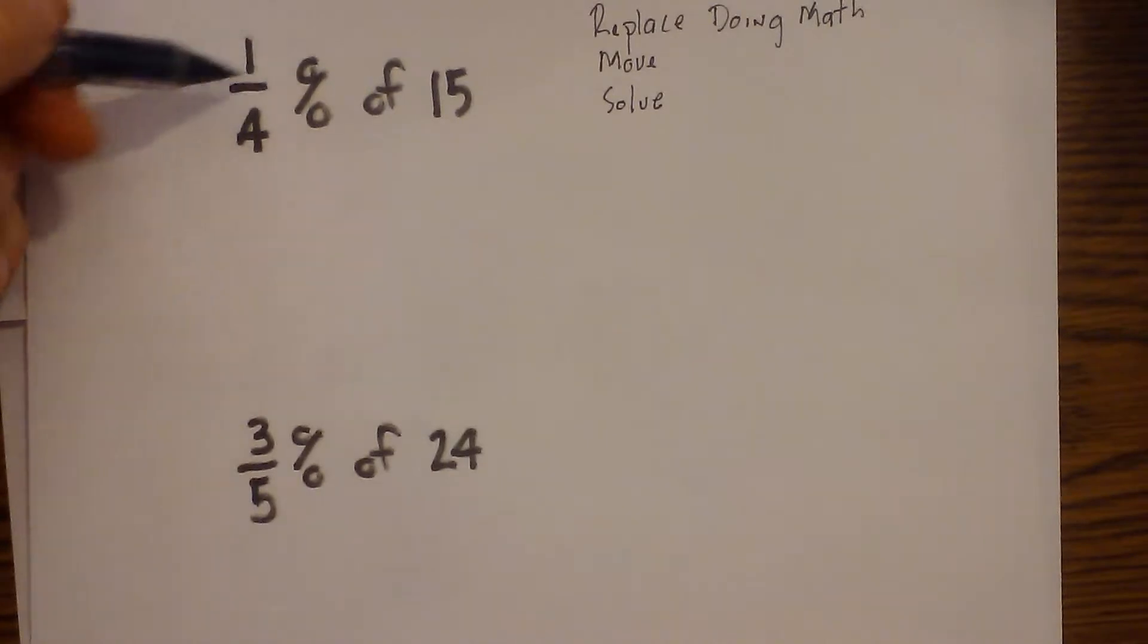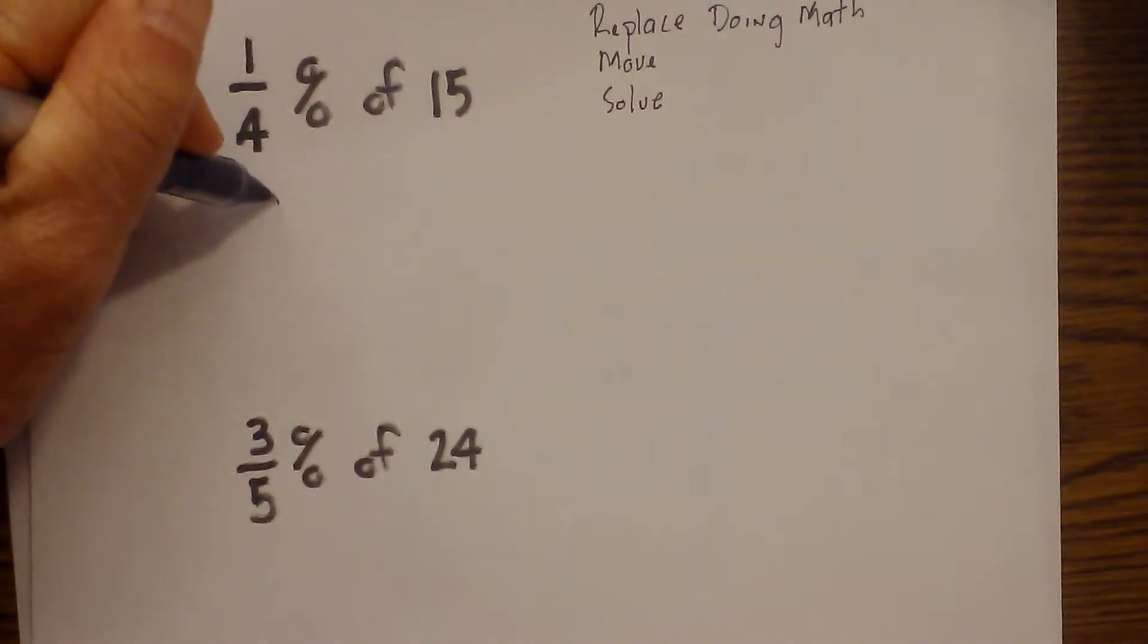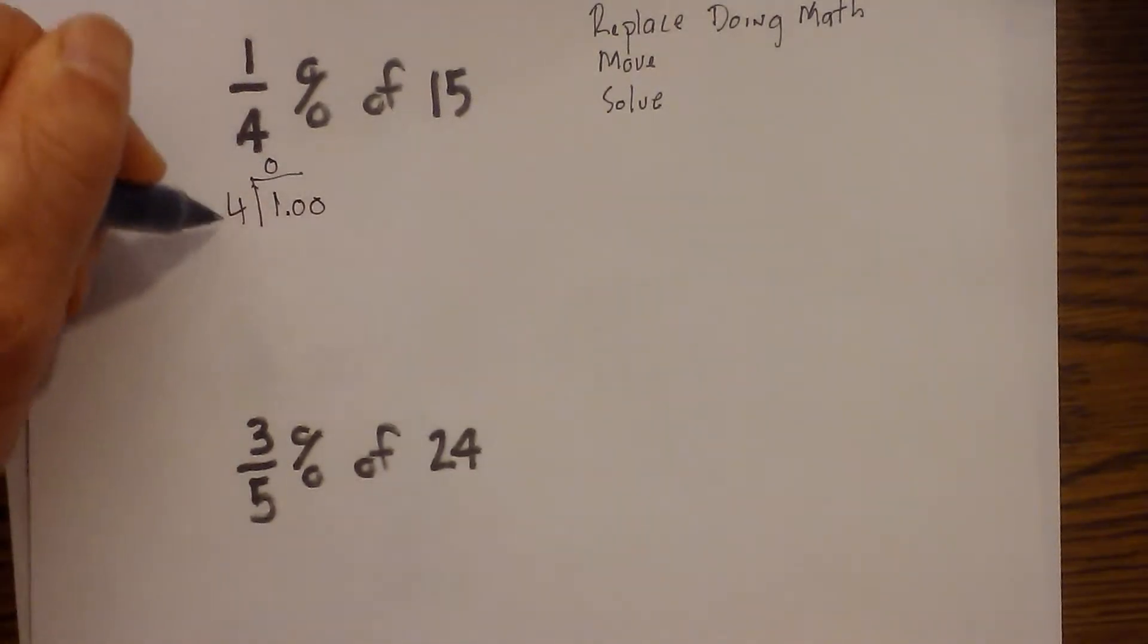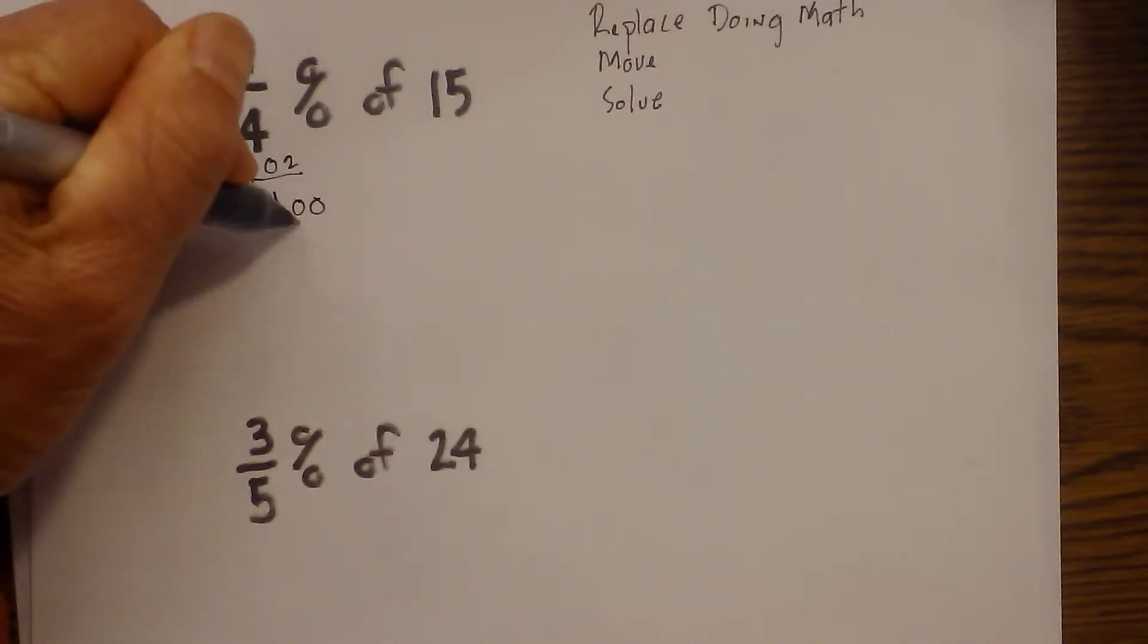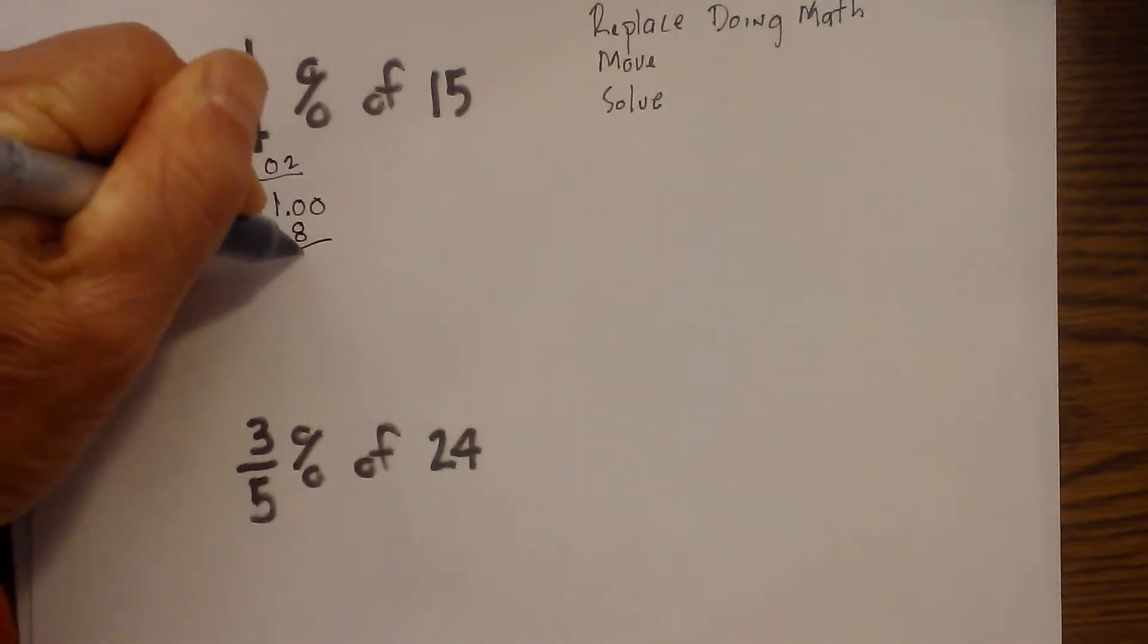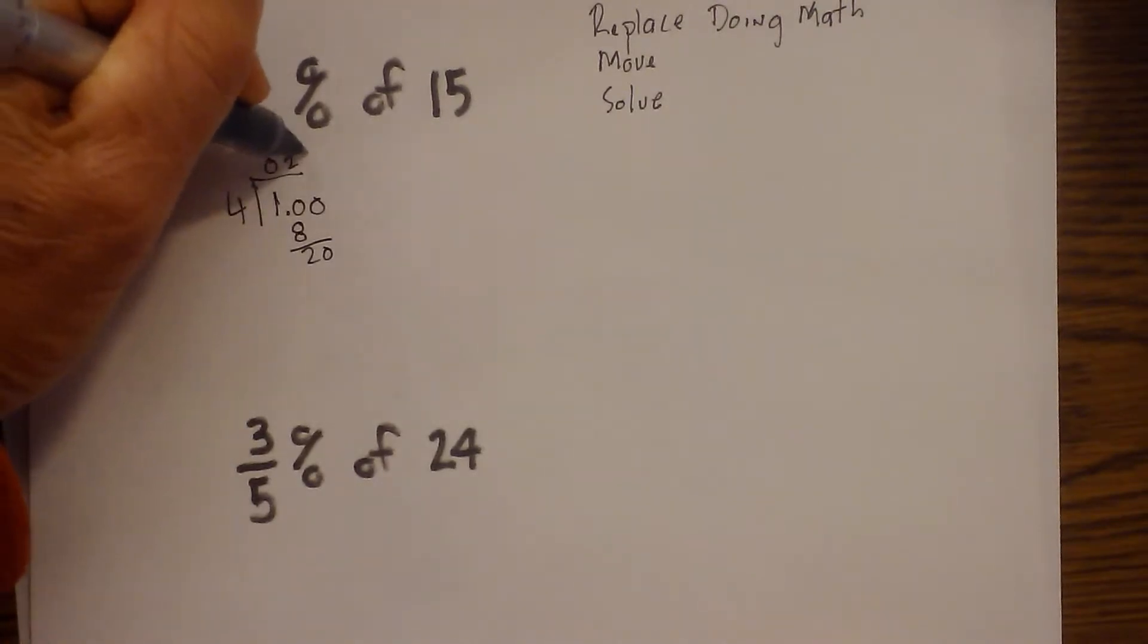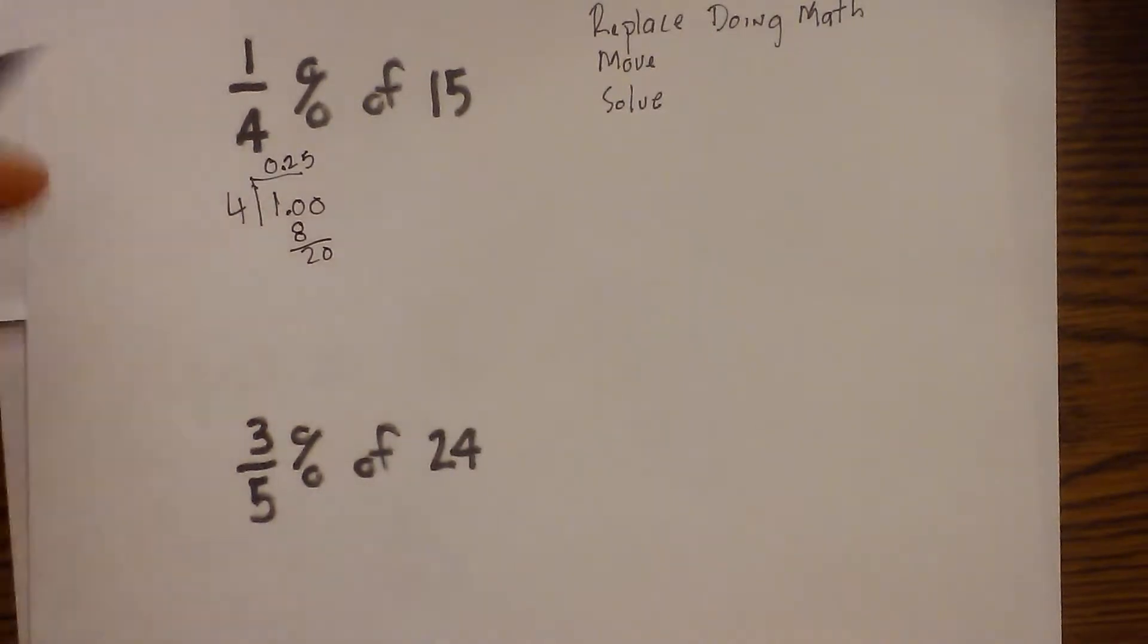I need to replace this percent with a decimal. So I need to convert 1 fourth into a decimal. So I will do that by dividing 1 divided by 4. 4 goes into 1 zero times, 4 goes into 10 two times, which is 8. That gives me 2 left over and 4 times 5 is 20. So remember, next you move the decimal up so it becomes 0.25.